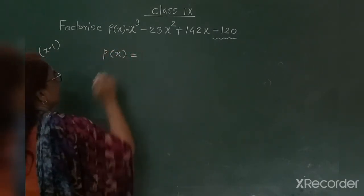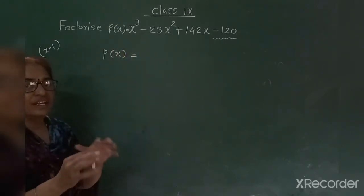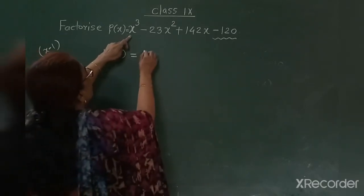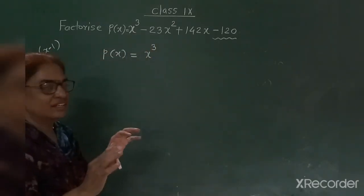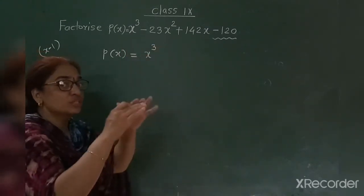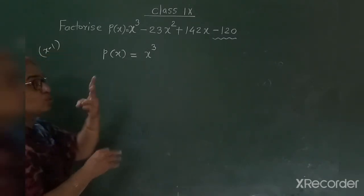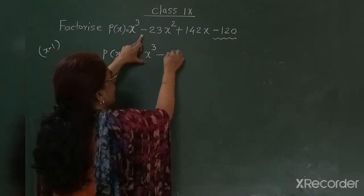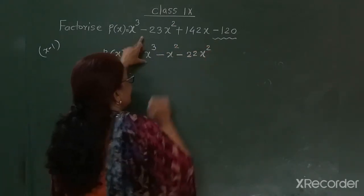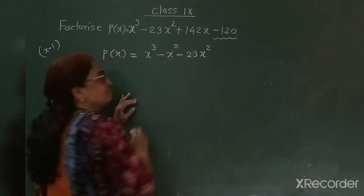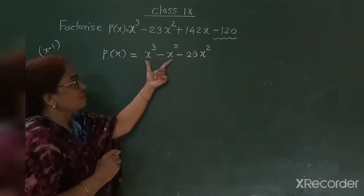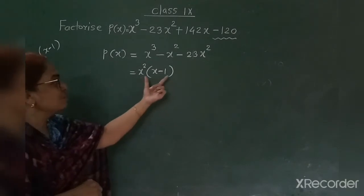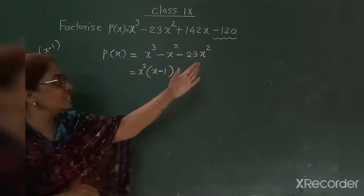Now we rearrange P of x so that we can take x minus 1 as a common factor. I keep the first term as x cubed. For the second term, I split minus 23x squared into minus x squared minus 22x squared — the value is still minus 23. I do this because from the first two terms, taking x squared common leaves x minus 1 inside the bracket. So I need x minus 1 to appear in every term.